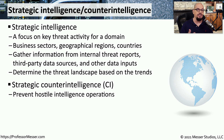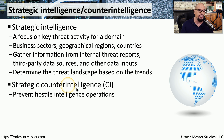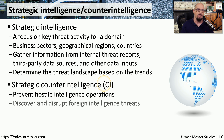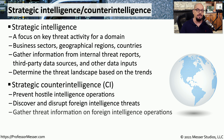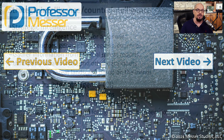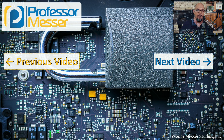If we're the subject of someone's strategic intelligence, we may want to prevent that intelligence from occurring. Instead, we would perform strategic counter-intelligence, or CI. With CI, we would identify someone trying to gather information on us and attempt to disrupt that process. We would then begin gathering our own threat intelligence on that foreign operation.